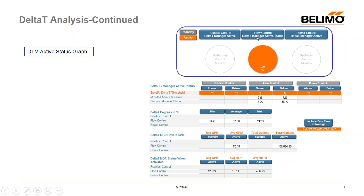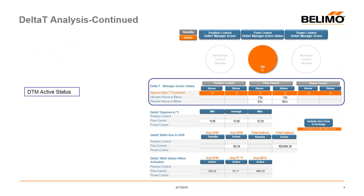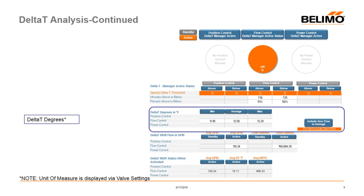Anything shown in orange allows you to input values. This box, broken out by control mode, lets you enter a temperature delta T — say 10 degrees — and it tells you how many minutes the valve was above or below that value. It's useful to play around with to see where the valve is running. The delta degrees in Fahrenheit section shows minimum, average, and maximum delta T by control mode. In this scenario we're averaging around 12 degrees, and since the delta T manager was set at 12 degrees, this confirms we're holding it at 12 degrees.